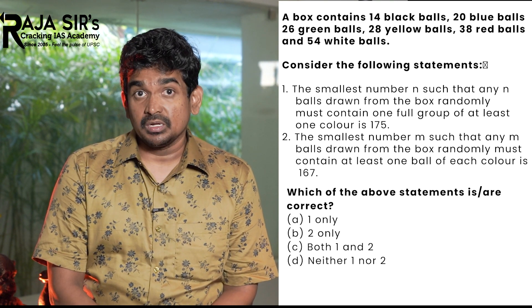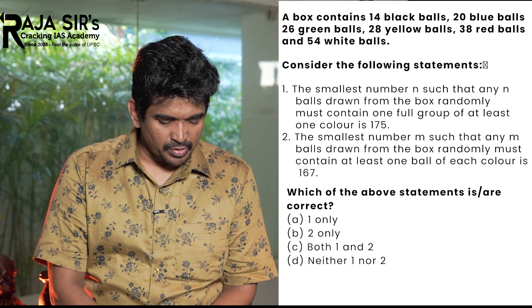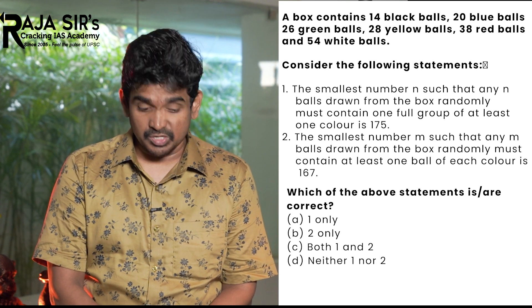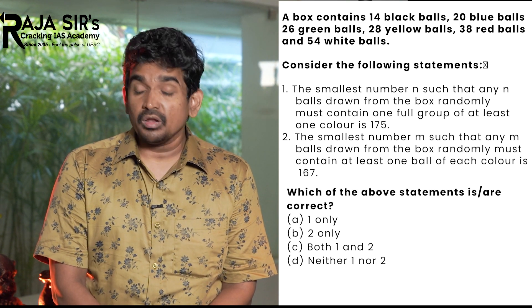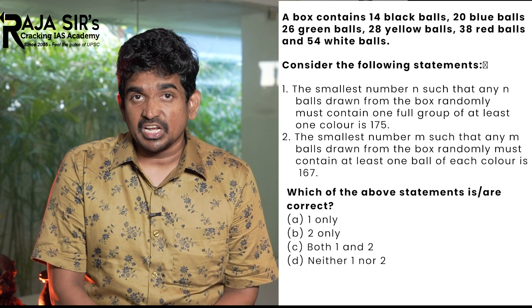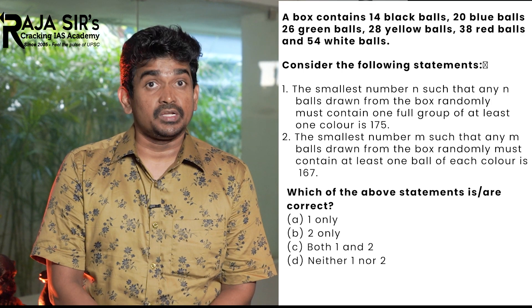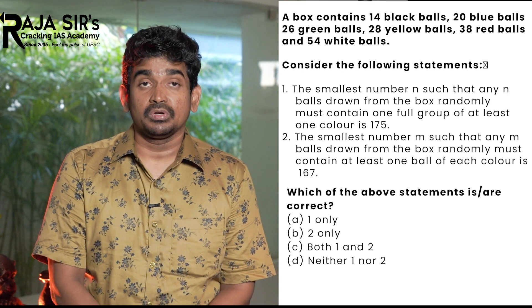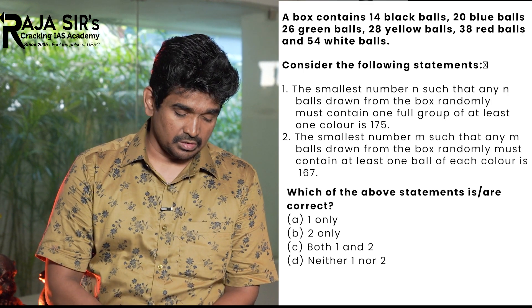Statement 2: The smallest number m such that any m balls drawn from the box randomly must contain at least one ball of each color is 167. Which of the above statements is/are correct? Option A: one only. B: two only. Option C: both one and two. Option D: neither one nor two.